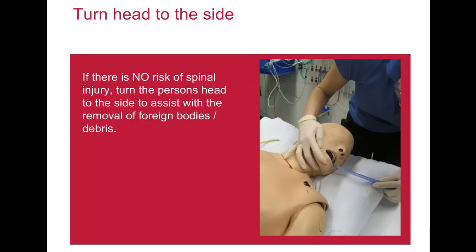When there is a risk of cervical spine injury, establish a clear airway using the jaw thrust or chin lift in combination with manual in-line stabilization of the head and neck by an assistant. If life-threatening airway obstruction persists despite effective application of the jaw thrust or chin lift, gently add head tilt a small amount at a time until the airway is open. The establishing of a patent airway takes priority over concerns about potential cervical spine injury.